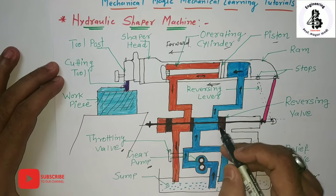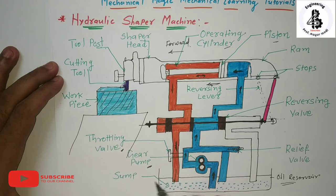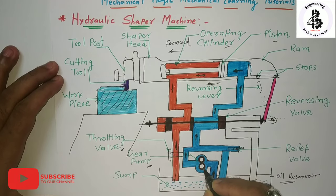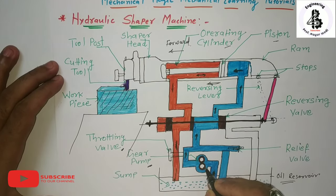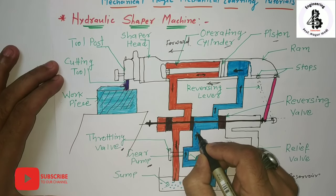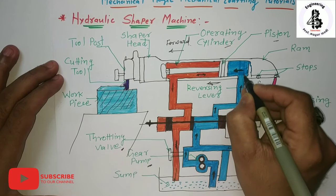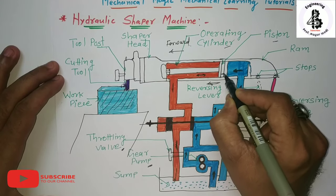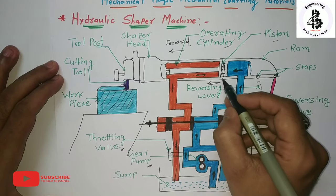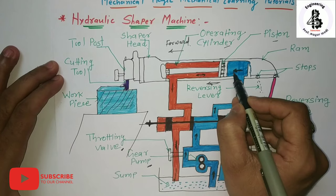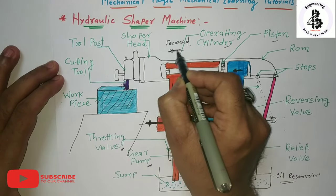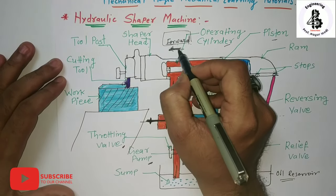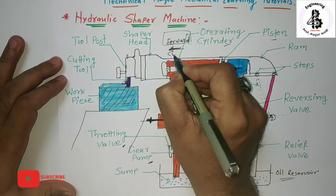In the working of this mechanism, the oil collected in the sump or oil reservoir is pumped at high pressure by the gear pump. The oil passes through the valve and enters the right side of the piston, increasing the pressure. This causes the cylinder to move in the forward direction, which is called the cutting stroke.